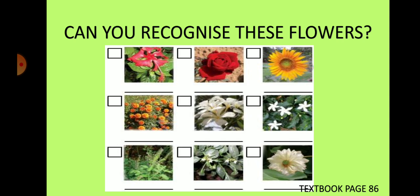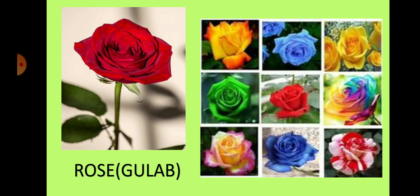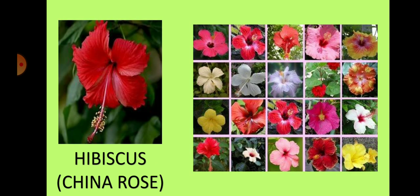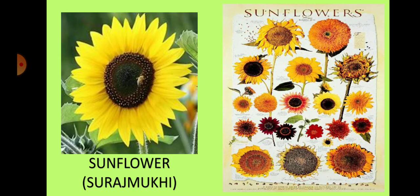Let us observe. Look here — this is the picture of a rose, or gulab. It comes in various colors, but the most common color is red. This is the picture of hibiscus, or china rose. Hibiscus also comes in various shades. This is sunflower, or suraj mukhi. Sunflower also comes in various colors like orange, bright red, and brown.